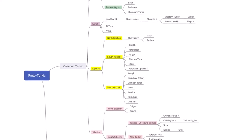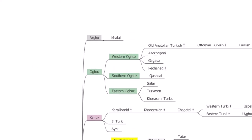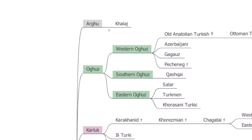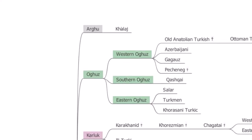In the Common Turkic branch we have five sub-branches. One is quite distinct — the Khalaj language — but it belongs to Common Turkic. Nobody really knows where it came from; it's a very archaic language spoken today in Iran and possibly Afghanistan. It is said that the Khalaj are descendants of the Hephthalites, the White Huns. According to Mahmud Kashgari, there were also other Arghu groups, but they are not included here.